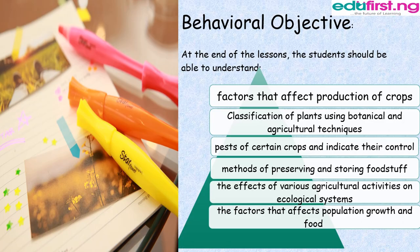My name is Chukuka Tolokweogu and I'll be taking you on this topic. By the end of this topic, you should be able to understand: factors that affect production of crops; classification of plants using botanical and agricultural techniques; pests of certain crops and their control; methods of preserving and storing foodstuff; the effects of various agricultural activities on ecological systems; and the factors that affect population growth and food availability.